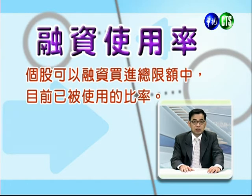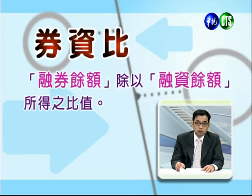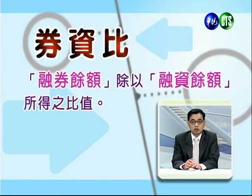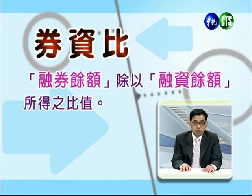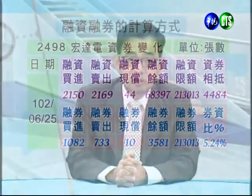接下来介绍第二个重点：融资融券与股价之间的关系。首先了解几个名词：第一个是融资使用率，即个股可以融资买进总限额中目前已被使用的比例。第二个名词是券资比，即融券余额除以融资余额所得到的比值。